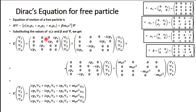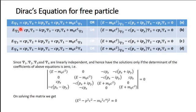Multiplying the matrices out gives a single column matrix. Comparing components, E psi-1 equals c p-x psi-4 plus iota c p-y psi-4 plus c p-z psi-3 plus m-naught c-squared psi-1. Rearranging, combining psi-1 terms: (E minus m-naught c-squared) psi-1 equals c p-x psi-4 plus iota c p-y psi-4 plus c p-z psi-3.